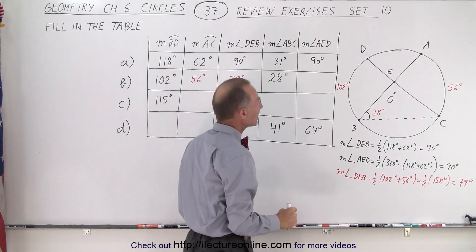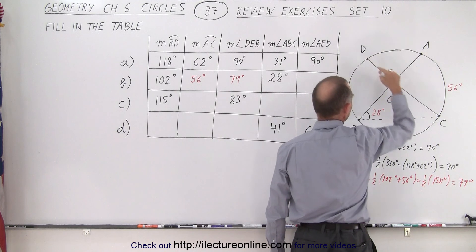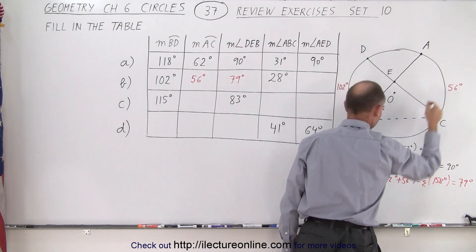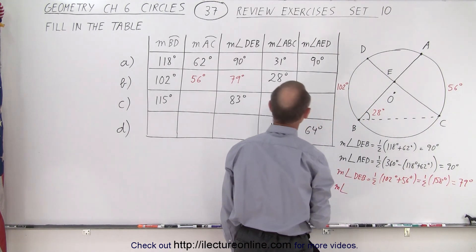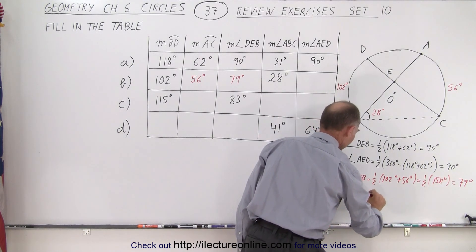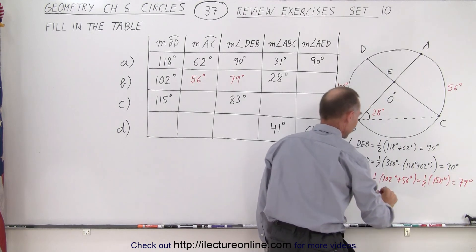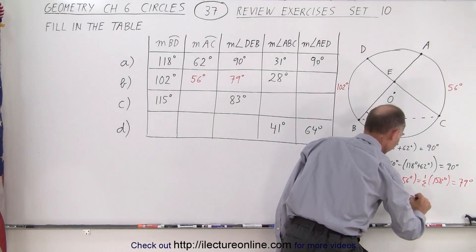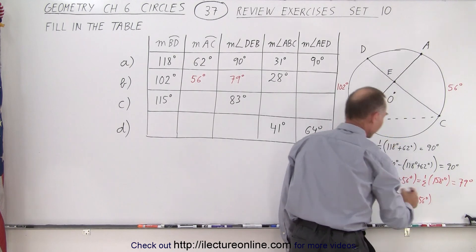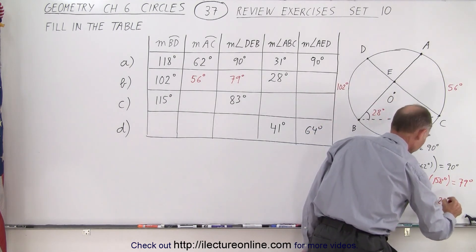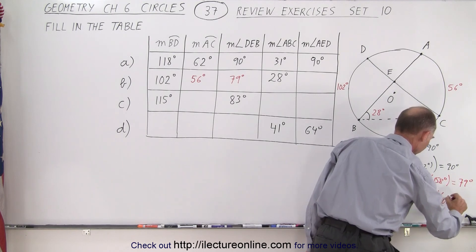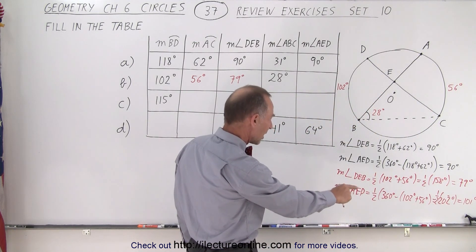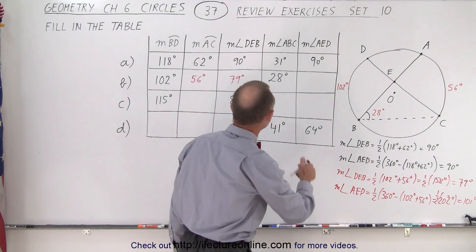Finally, the measure of angle A-E-D. We don't know the individual arc lengths, but we know their sum because we know these two. So the measure of angle A-E-D is equal to one half times 360 degrees minus the sum of the other two, which is 102 degrees plus 56 degrees, equaling 158 degrees. Subtract from 360 gives 202 degrees; half of that is 101 degrees.